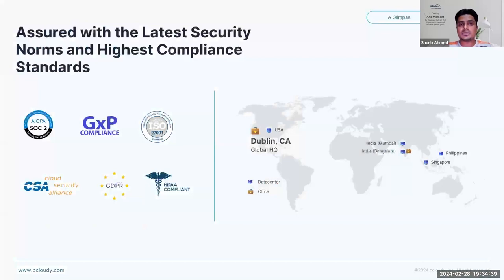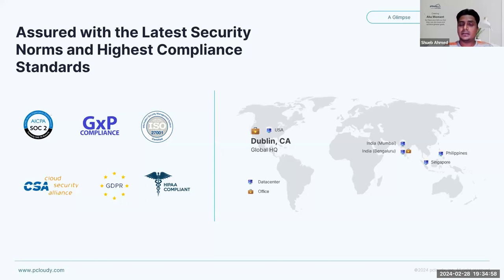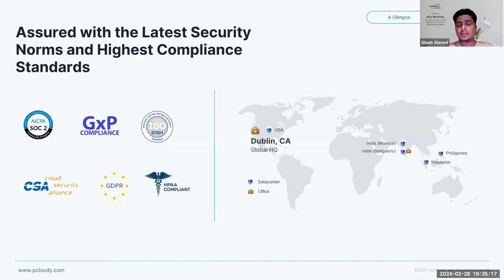Let me talk about security norms and compliances that we adhere to. Our data centers are hosted across different locations in India, Singapore, Philippines, and the US. We are also moving towards the Gulf and European regions. From the security standpoint, we are SOC 2 and ISO 27001 compliant, as well as GxP, GDPR, and HIPAA compliant. We adhere to all industry standards when it comes to security and compliance.